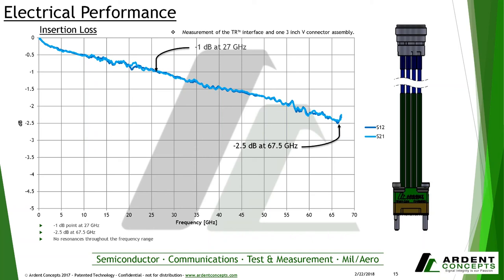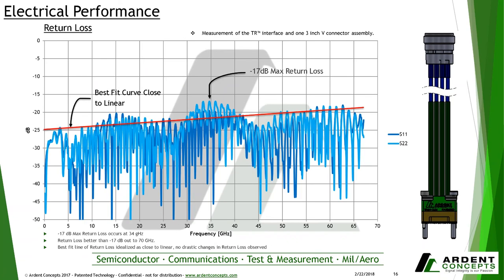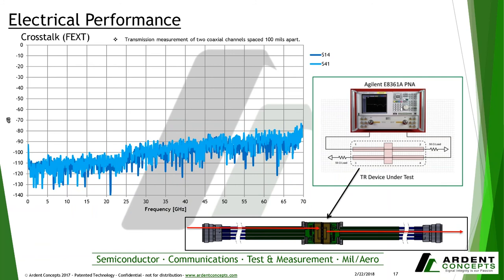Looking at the electrical performance of the TR Multi Coax connector: the insertion loss measurement includes the TR interface, three inches of cable, and a 1.85mm connector. The minus 1 dB point is at 27 GHz and the minus 2.5 dB point is at 67.5 GHz — well under 3 dB of loss out to 70 GHz — with no resonances throughout the frequency range, showing very clean signal integrity. For return loss, the minus 17 dB point occurs at 34 GHz as the maximum, and return loss is better than minus 17 dB throughout the 70 GHz range.